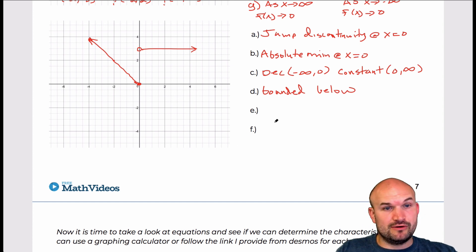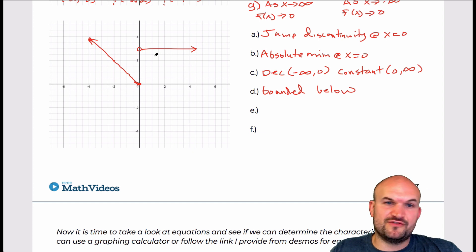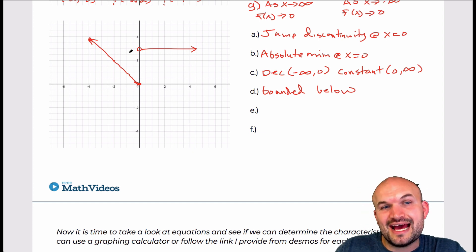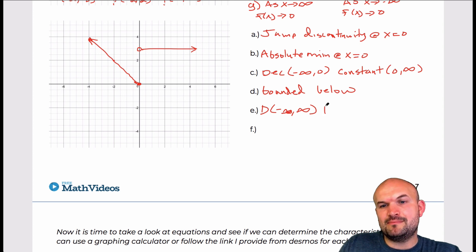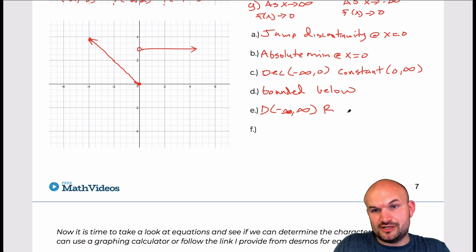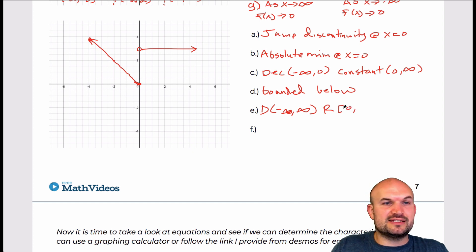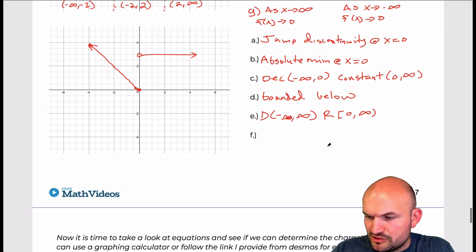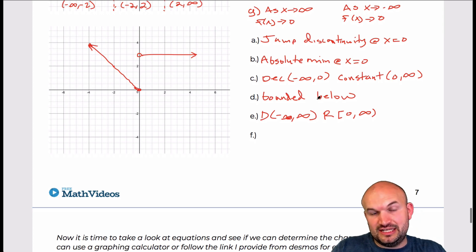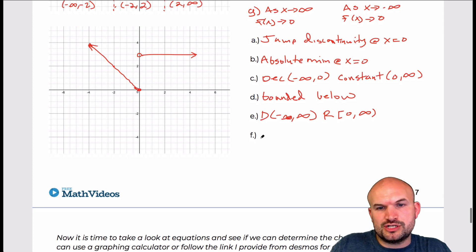Part E, domain and range. The domain: the graph goes from negative infinity to infinity. Even though there's an undefined value at x equals 0 in one piece, that value is defined in the other piece, so the domain covers all values — negative infinity to infinity. The range: the lowest the graph goes is 0, which is included, and it continues to infinity. So the range is from 0 to infinity with a bracket at 0. Part F: this graph has no symmetry with the y-axis or origin, so it is neither even nor odd.